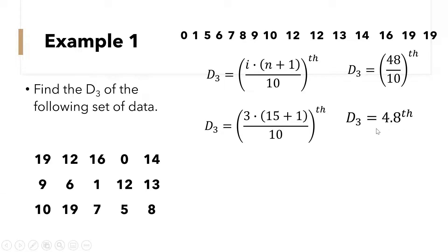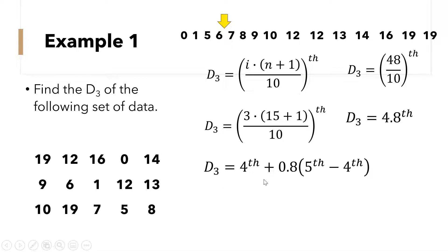So decile 3 is the 4.8th data position. Counting through the ordered data — 1, 2, 3, 4 — the 4.8 position falls between the 4th data and the 5th data. To find decile 3, we take the 4th data plus 0.8 times the difference between the 5th data and the 4th data.